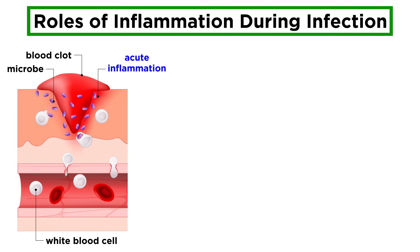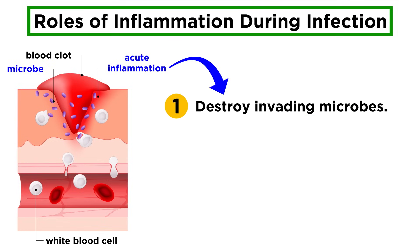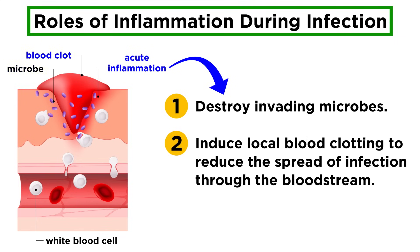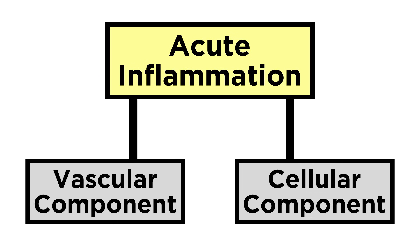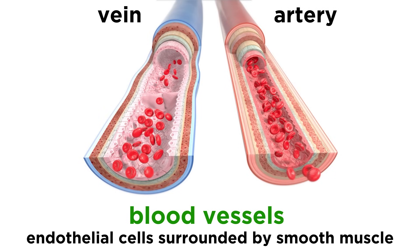Acute inflammation plays three main roles during an infection. Let's focus on describing the process of acute inflammation. Acute inflammation is made up of two major components: the vascular component and the cellular component.